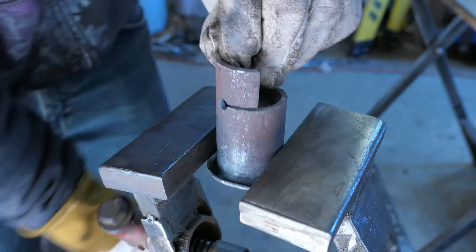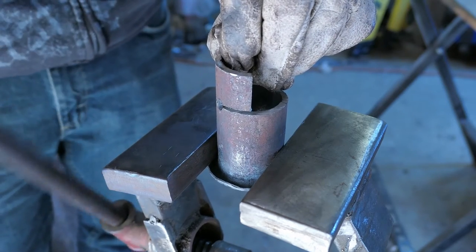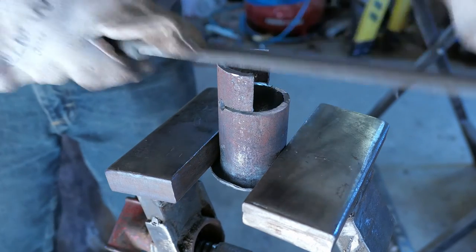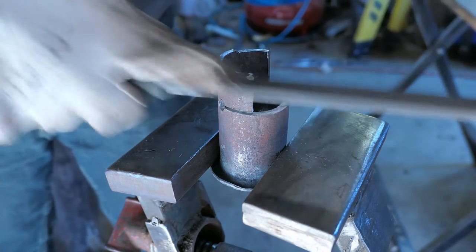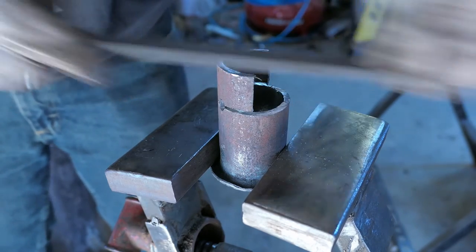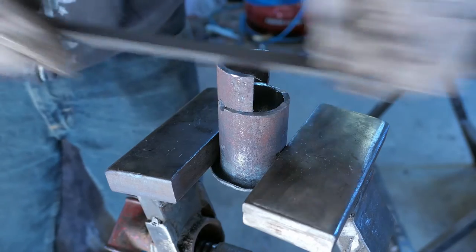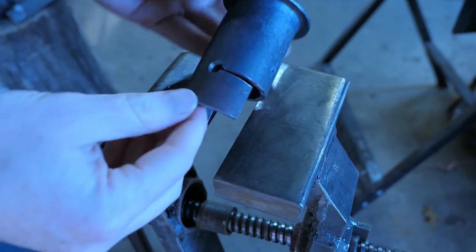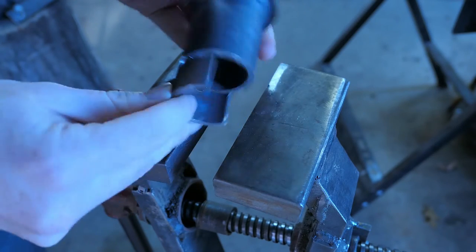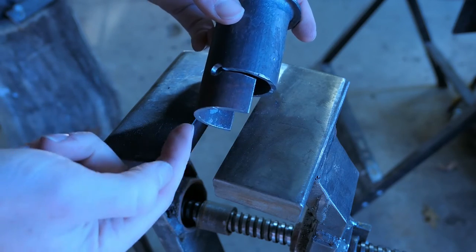Then after it's cut out, I'm just going to clean it up by using a file to get rid of any rough edges. Now all that's left to do is to flatten out the tab that's going to be secured in the vise and sand a better finish onto the rounded edge at the top.